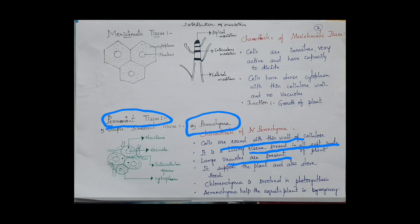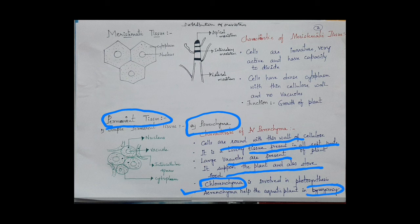Presence of large vacuoles and many intercellular spaces are present in this tissue. It supports the plant and also stores food. A parenchyma which contains chlorophyll is called chlorenchyma, which involves in photosynthesis and is present in the leaves. Another type of parenchyma is aerenchyma, which has air-filled spaces and is present in aquatic plants, helping in buoyancy — that is, the ability to float the plants on the surface of the water.